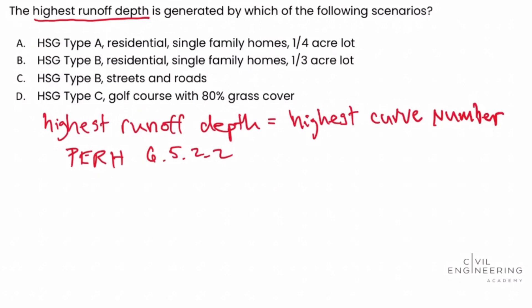We're going to work through each of the answer choice scenarios to see which one has the highest curve number. Looking at answer choice A first, we have HSG type A — hydrologic soil group type A soil — with residential single family homes on quarter-acre lots. The curve number for that is 61.